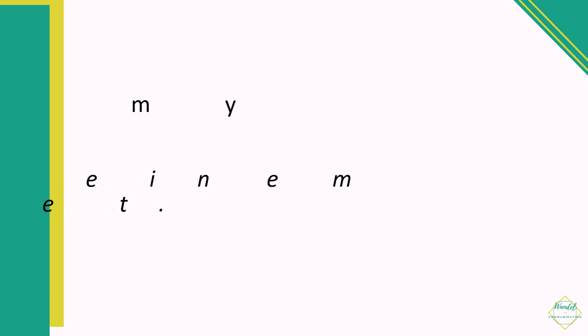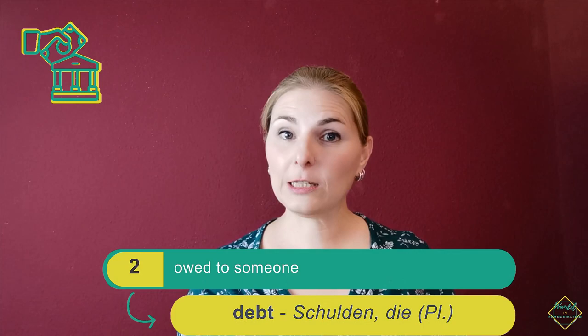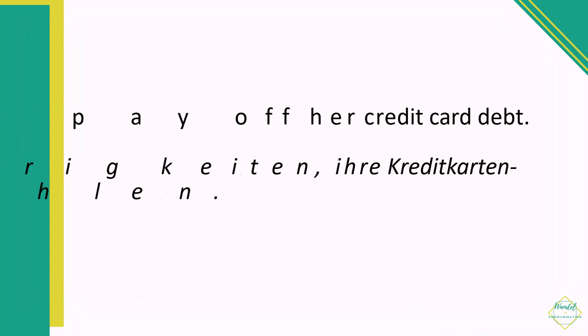So what's the money called you give to a bank when you use their services? This is called bank fees, or in German, die Bankgebühren. For example: 'I was charged $10 for bank fees on my monthly statement.' If you owe someone money, especially the bank — but also if you owe your friend money — you would say you are in debt. Please make sure not to pronounce the B: debt. For example: 'She struggled to pay off her credit card debt.' In German: Kreditkartenschulden.